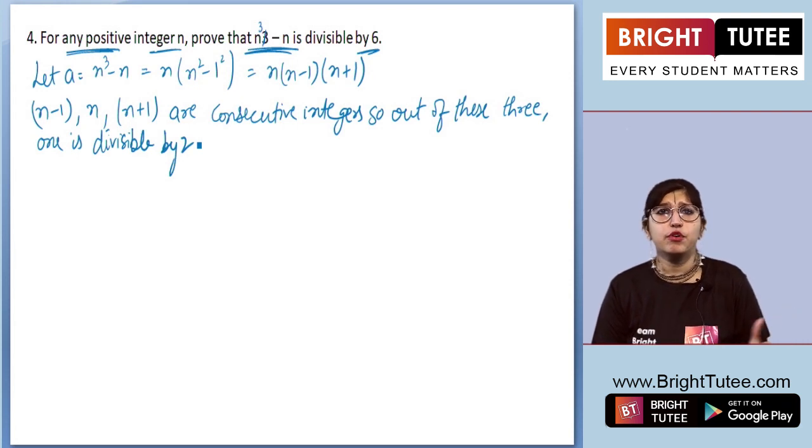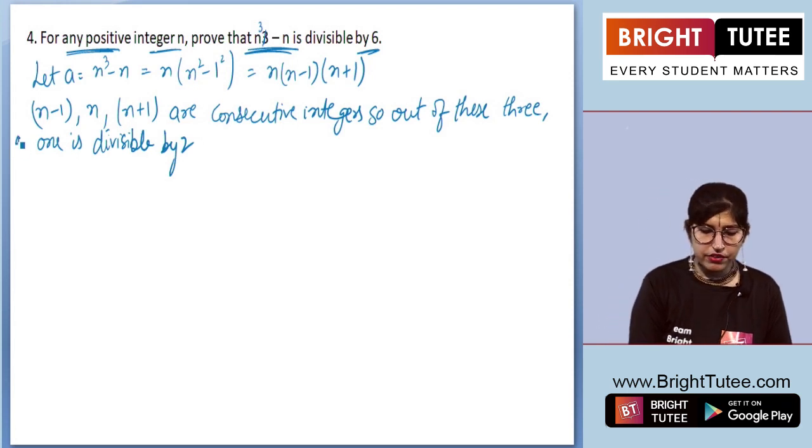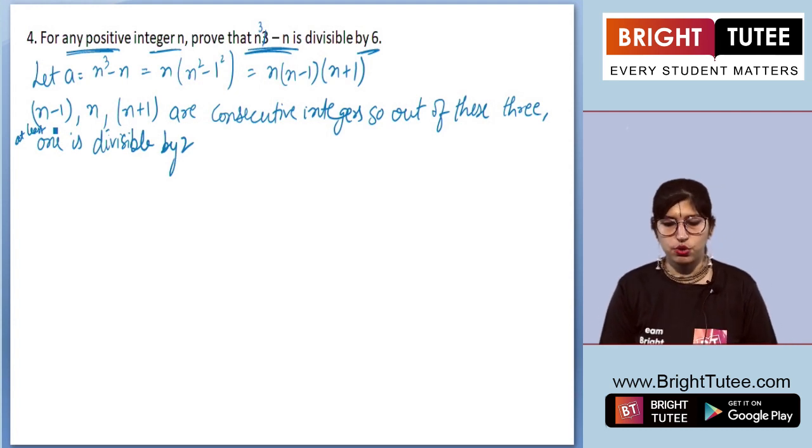Let's say we have 3, 4, 5. The numbers 3 and 5 are odd, but we still have 4, which is an even number divisible by 2. So out of these 3, at least 1 is divisible by 2.